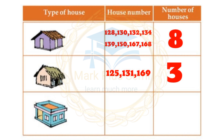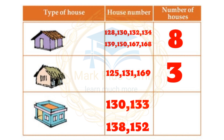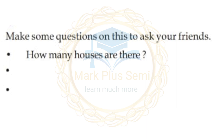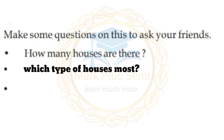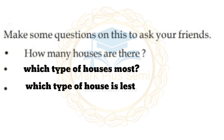Next is concrete houses. Concrete house numbers are 130, 133, 138 and 152 — total of 4. Make some questions to ask your friends: How many houses are there? Which type of house is the most? Which type of house is the least?